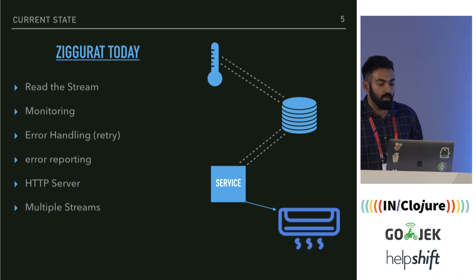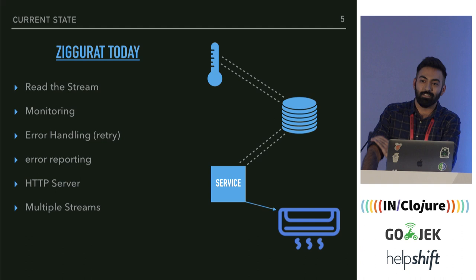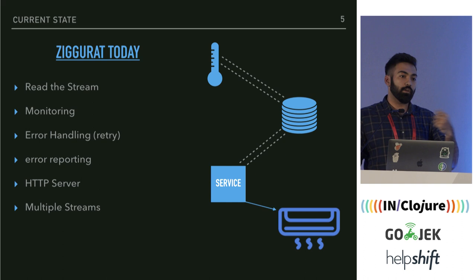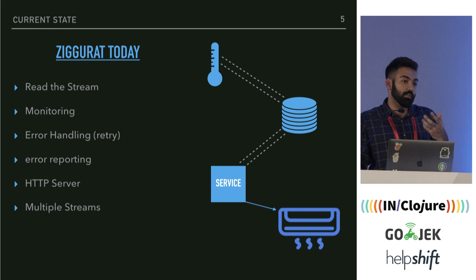To explain what Ziggurat is, let me start with an example. We're in this room — it's pretty cold. Let's say we want to set up a service that automatically turns the air conditioner on and off based on the temperature of the room. The most basic thing would be to set up a thermostat that reads the temperature every 10 seconds. Now you have the data, but you need a service to process it and make an API call to command the AC to turn off or on.